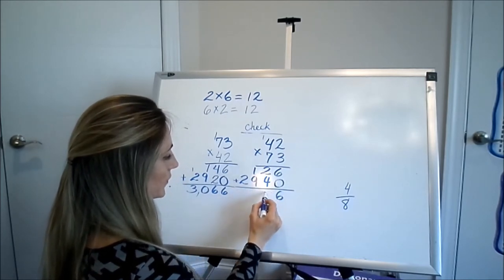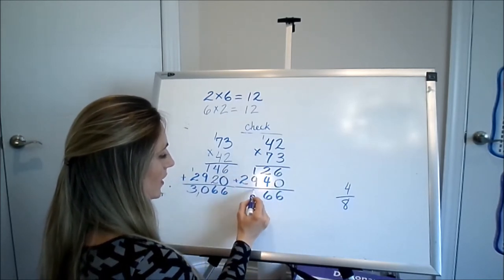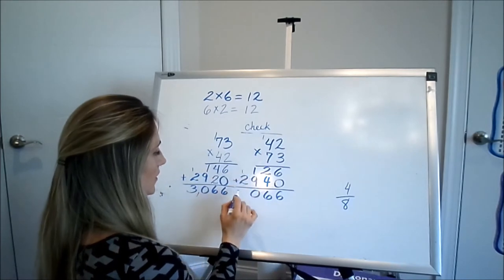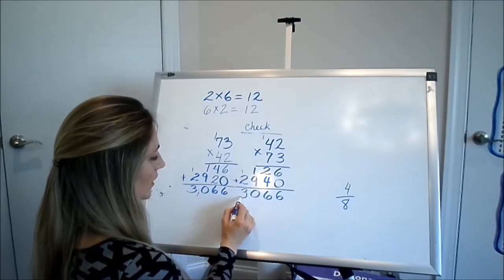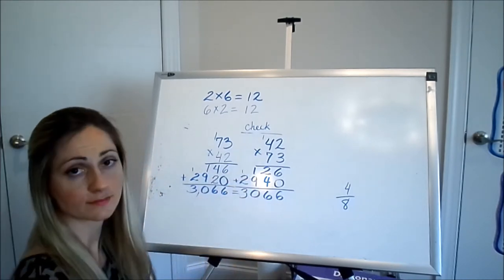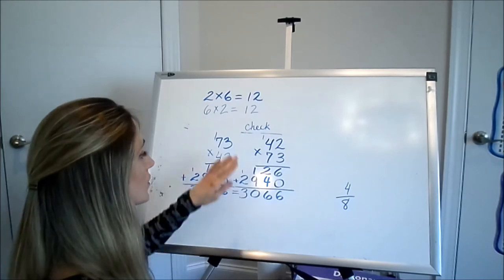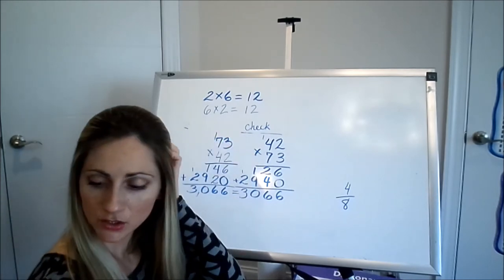Then you're going to add these two. You have a 6, you have a 6, you have a 0 and a 1. Are they equal? Yes, they are. So all you're going to do is flip. Take a look.